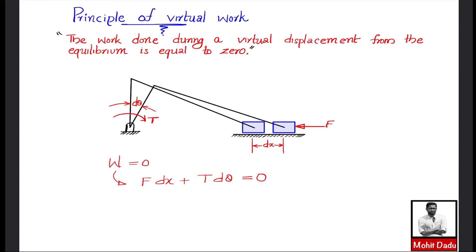If these infinitesimal displacements occur over a time period dt, we can differentiate each term of the equation with respect to dt. This gives: F·(dx/dt) + T·(dθ/dt) = 0.